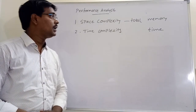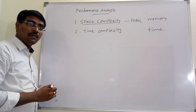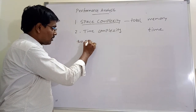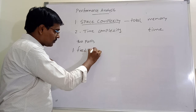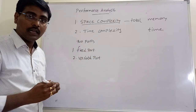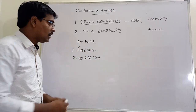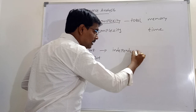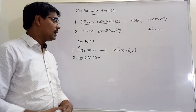Now first consider space complexity. Space complexity for an algorithm is calculated using two parts: the first one is the fixed part, and the second one is the variable part. Each and every algorithm is divided into these two parts. Fixed part means variables that have independent characteristics — one variable doesn't depend on any other variable.